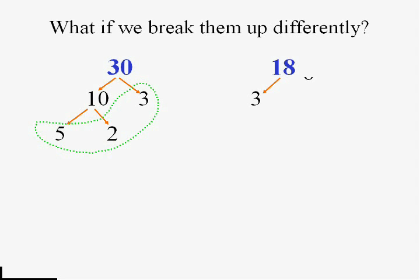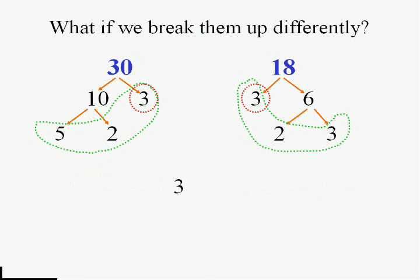If I went with 18 as 3 times 6 and not 9 times 2, I'd still have to break up that 6 and I'd still end up with a 2 and 2 threes. And I'd still, for my greatest common factor, have both of them would have a 3 and both of them would have a 2 and I'd still get the same answer of 6.